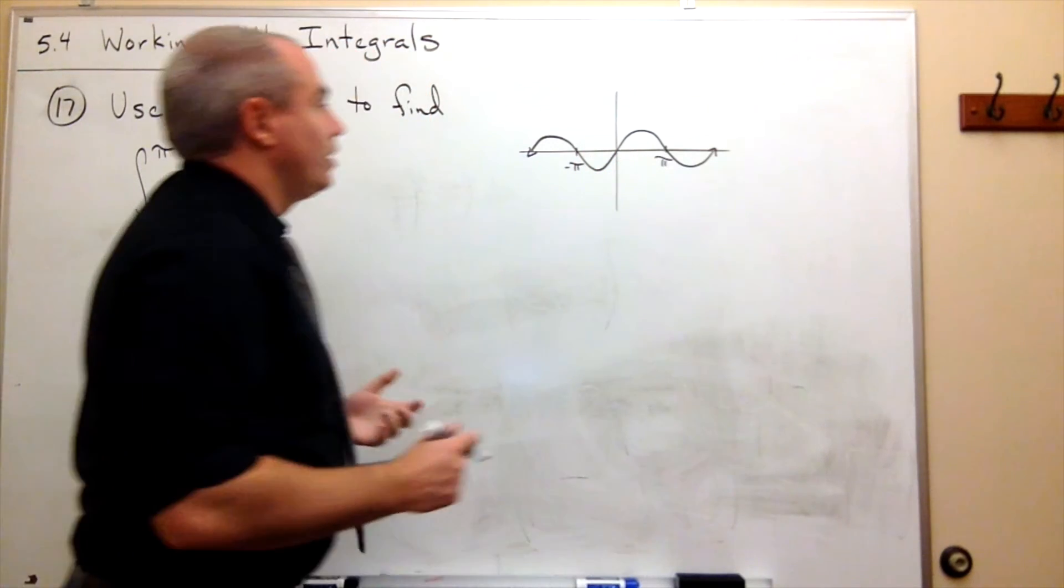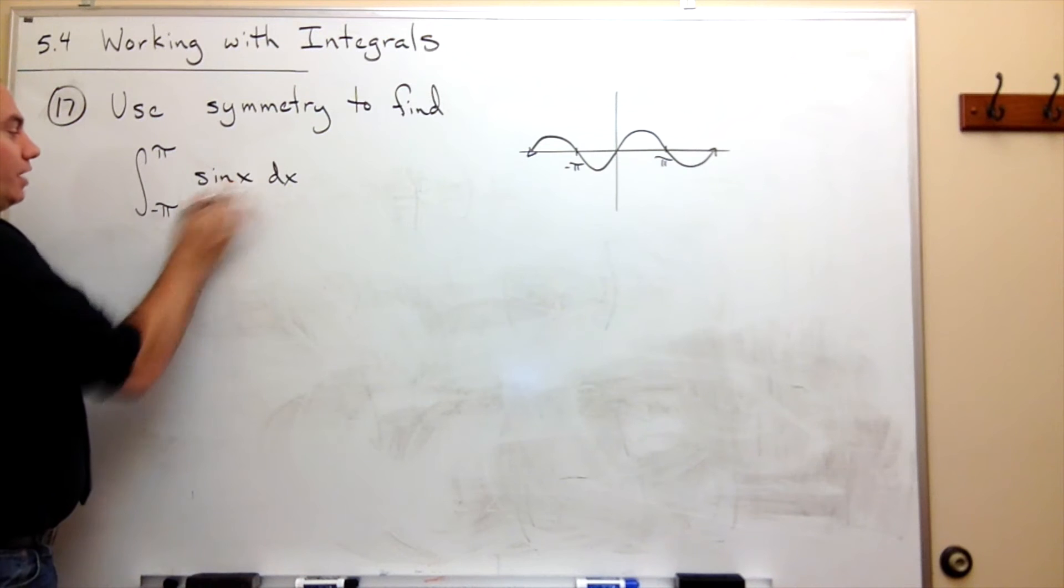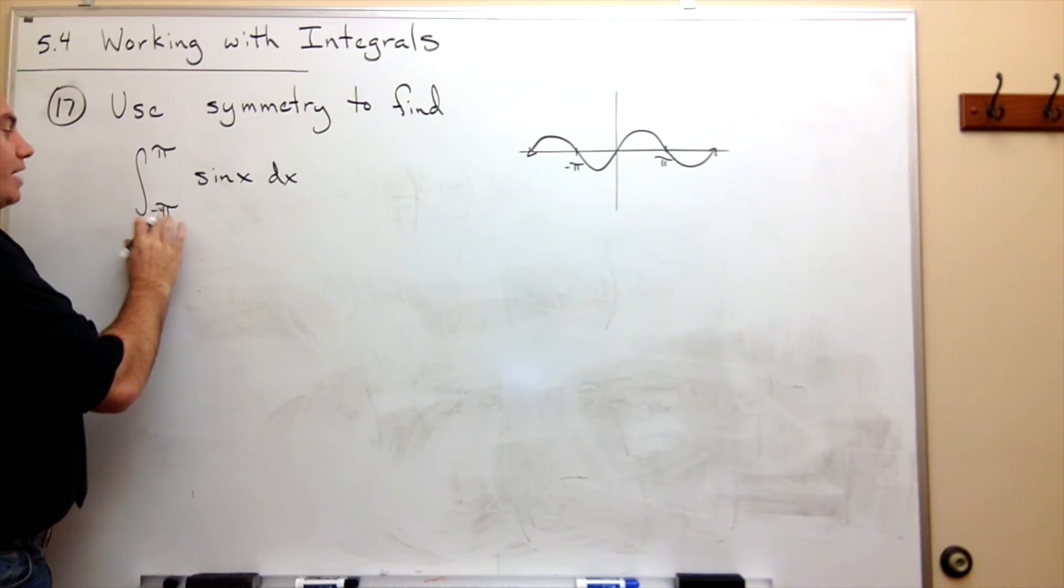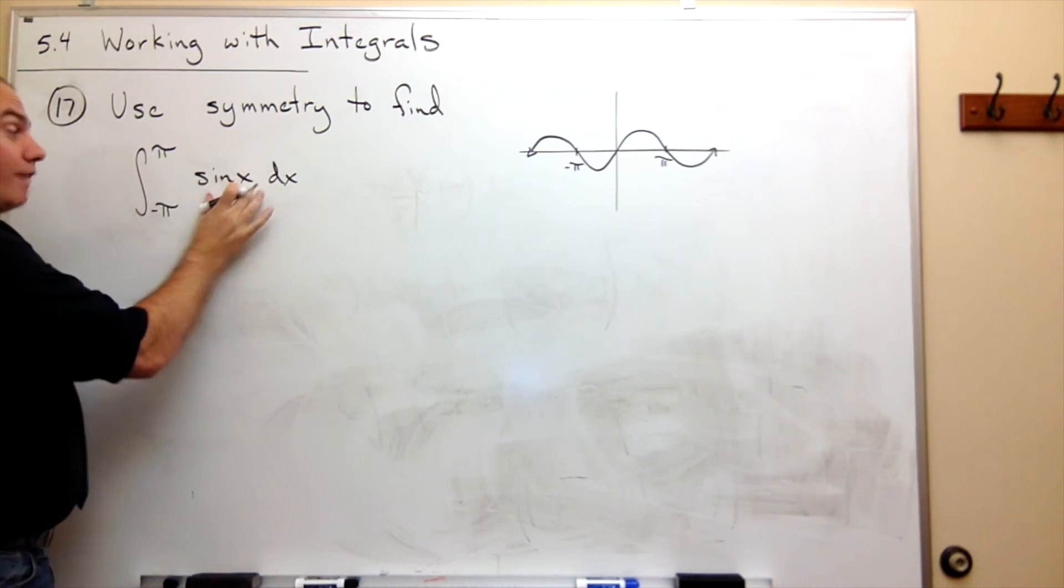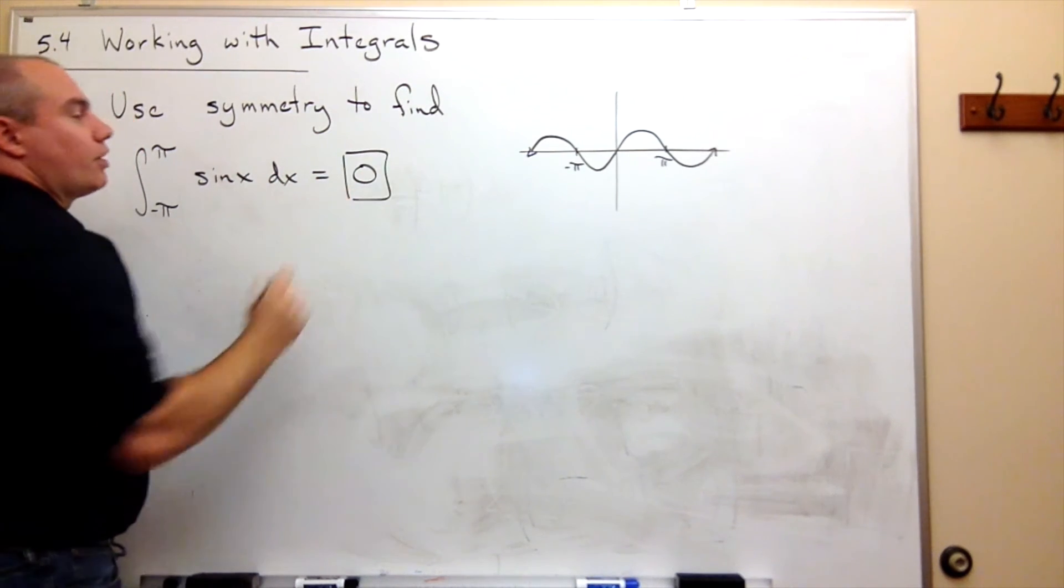And since it's an odd function, I know something about it. I know that if this thing is an odd function, then if I'm taking the integral from negative pi to pi of an odd function, that's just going to give me 0. And 0 is the answer.